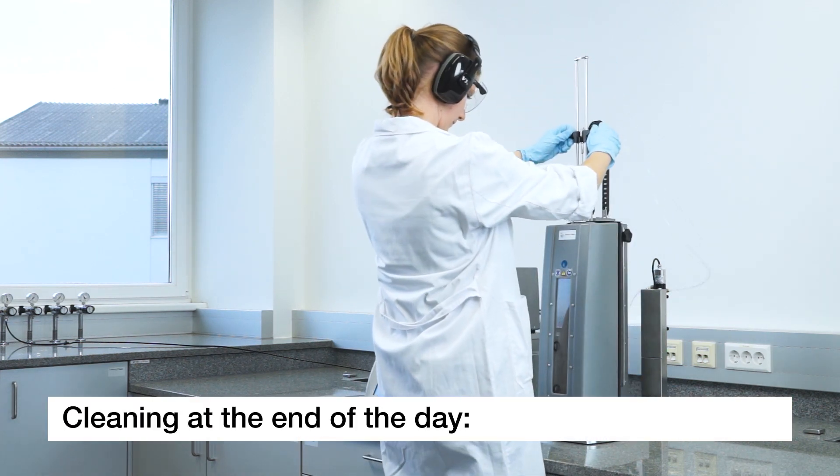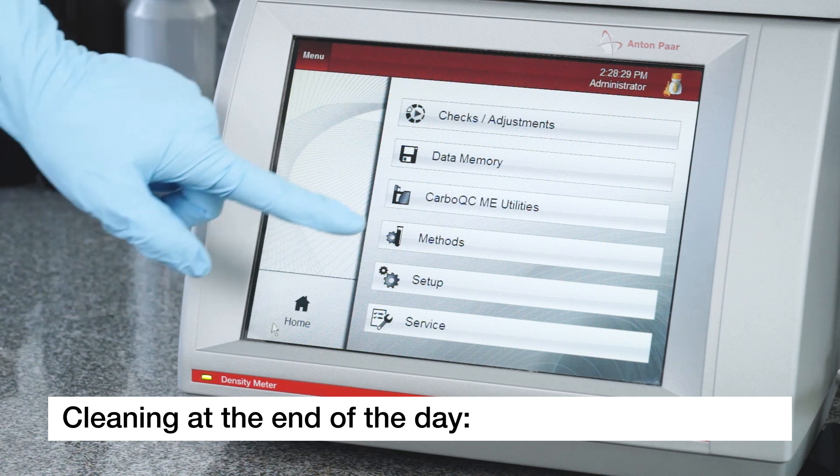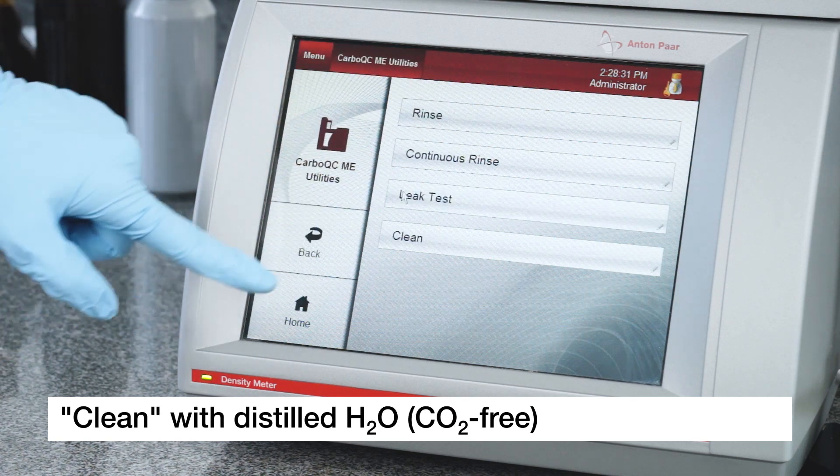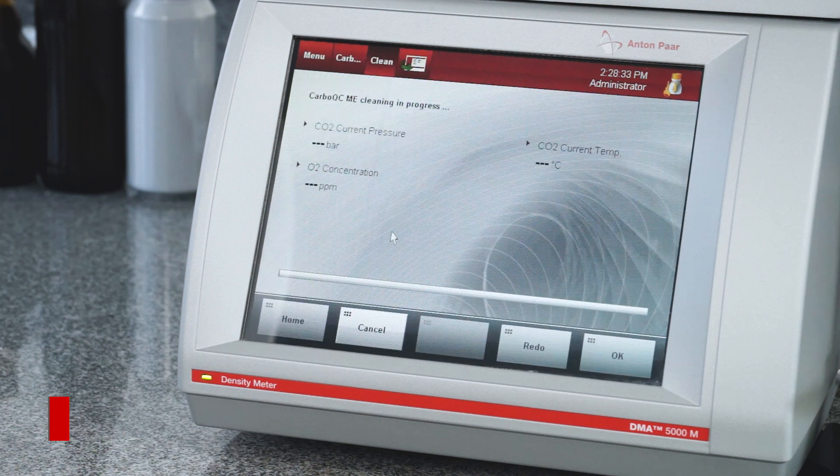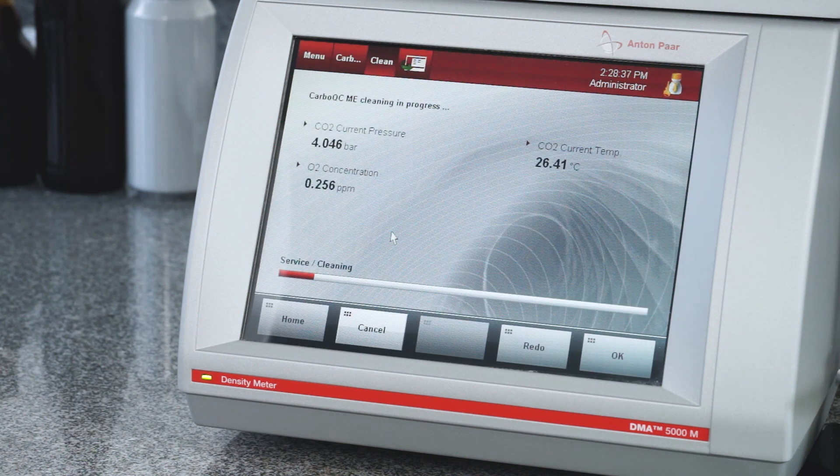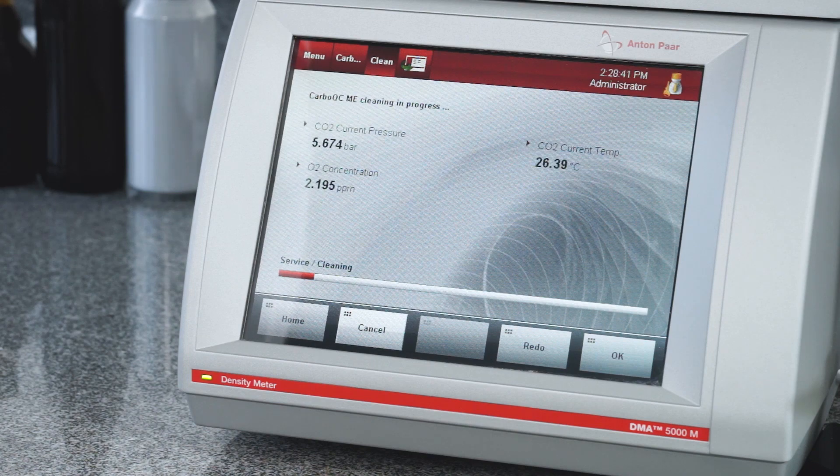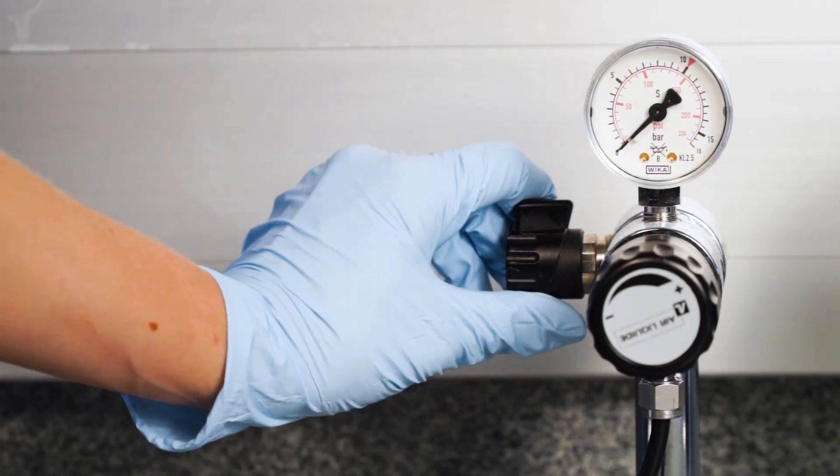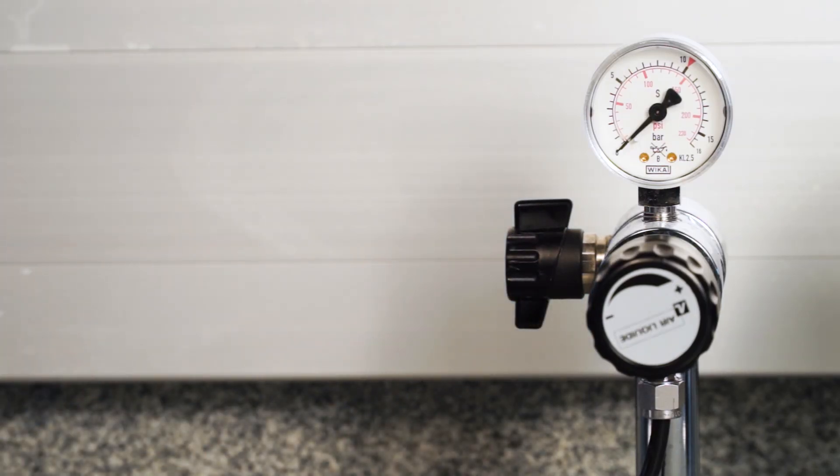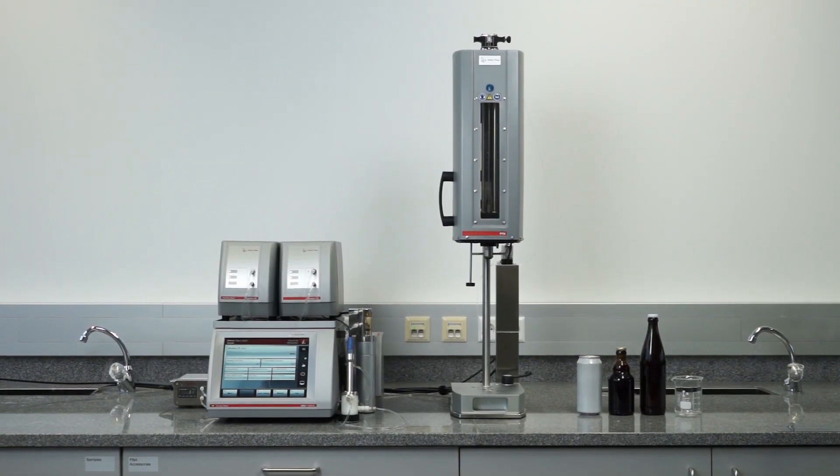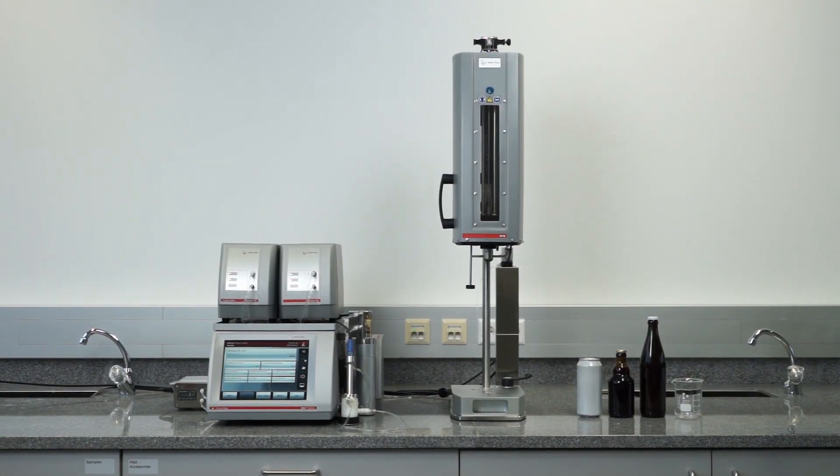For daily cleaning, insert a bottle of distilled CO2-free water instead of your sample. Select Clean to start the automatic process. After about two to three minutes, stop the process again. In case the analysis is stopped overnight for any reason, deactivate the pressure. Now the PBA system is clean and ready for the next measuring cycle.